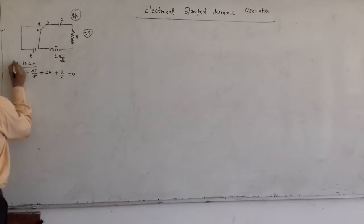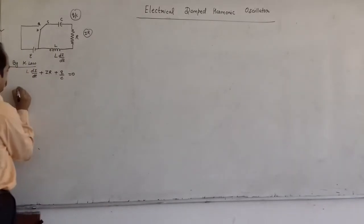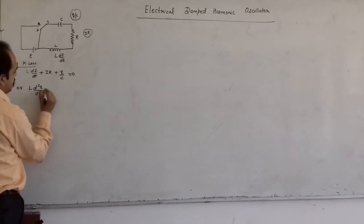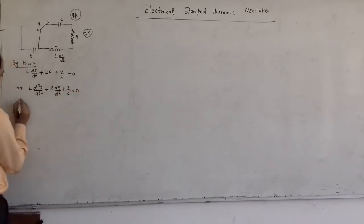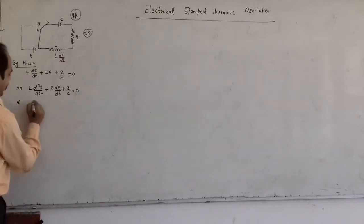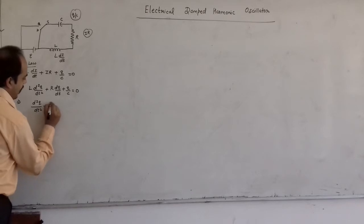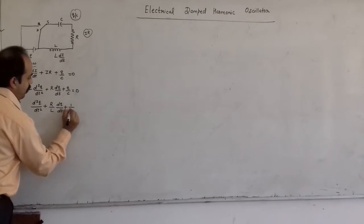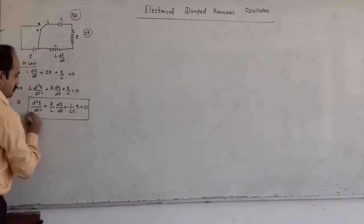Since I = dQ/dt, substituting gives L·d²Q/dt² + R·dQ/dt + Q/C = 0. Dividing the whole equation by L, we get: d²Q/dt² + (R/L)·dQ/dt + (1/LC)·Q = 0. Let this be equation number 1.